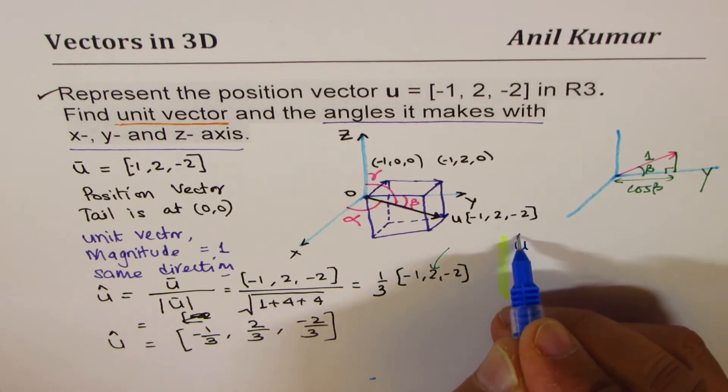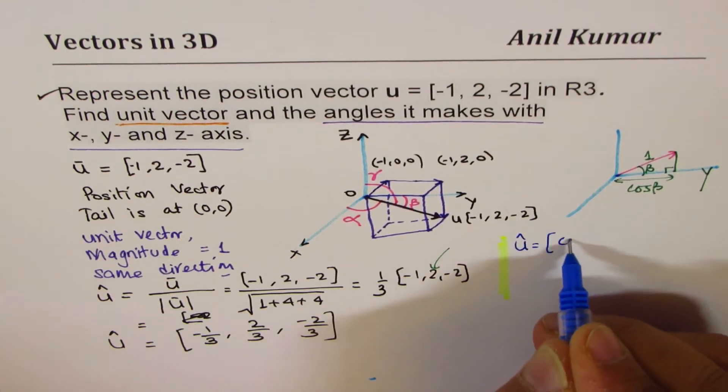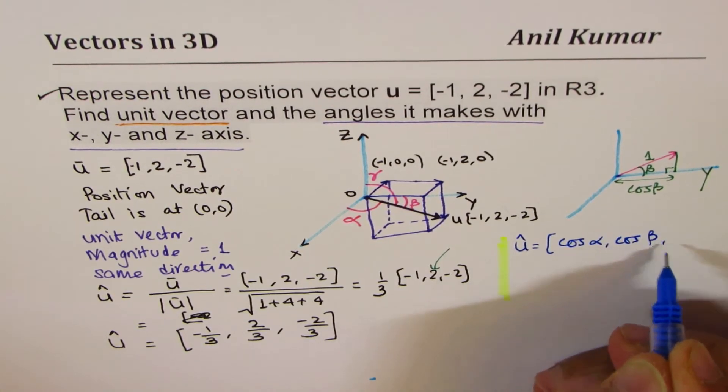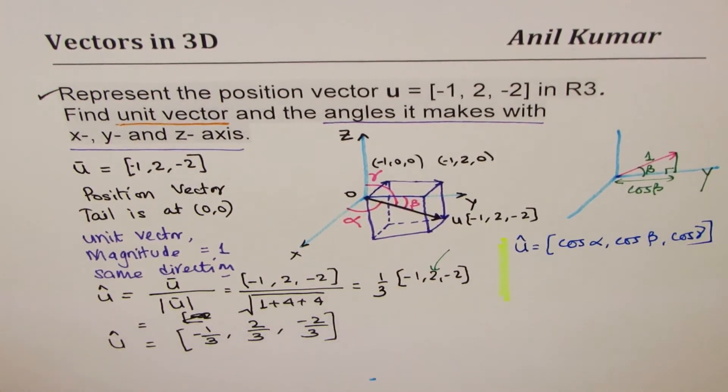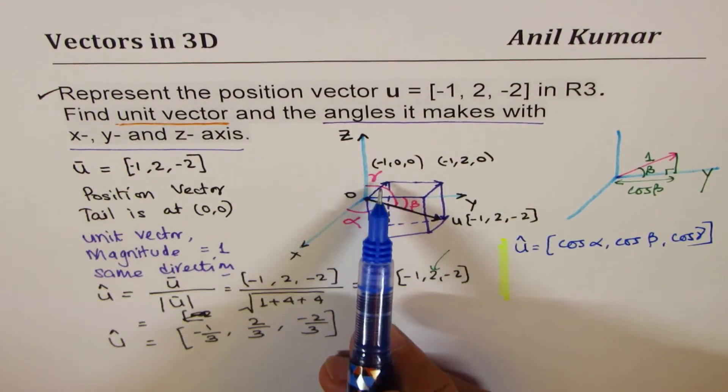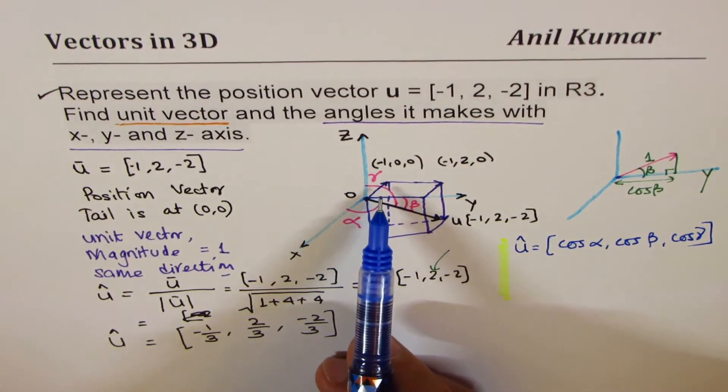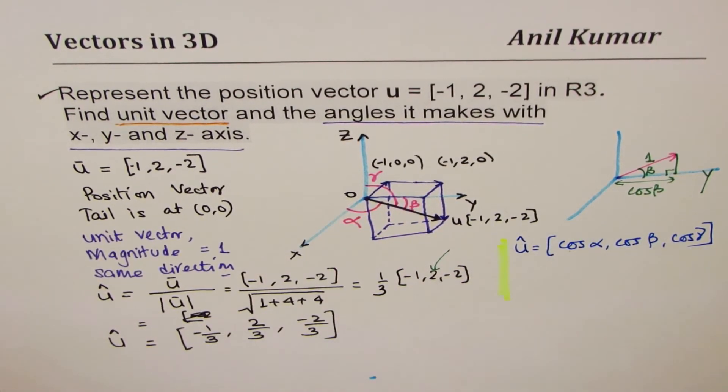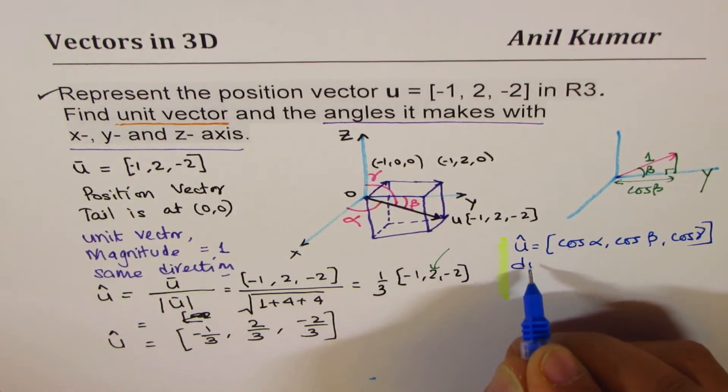Unit vector could also be written as cosine of alpha, cosine of beta, and cosine of gamma. So when it makes angle alpha, beta, and gamma, then the unit vector will actually be, each direction number will be its cosine. So we also call them as direction cosines.